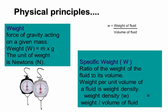Weight is the force of gravity acting on a given mass, and its unit is Newtons. Mass remains the same, but gravitational acceleration differs — for example, on the Moon the gravitational acceleration is different, so the weight of the body differs from what we observe on Earth. Specific weight is the weight of the fluid divided by its volume. Weight density equals weight divided by volume of the fluid.